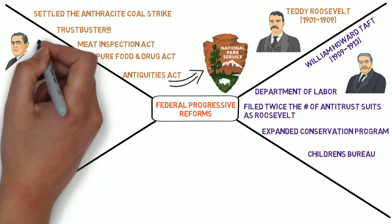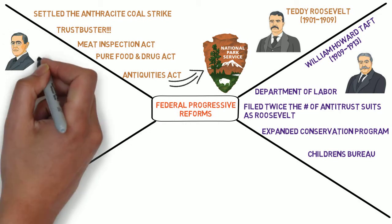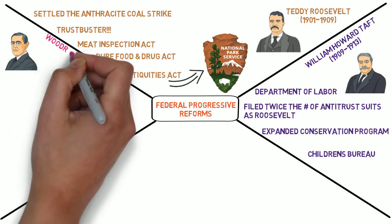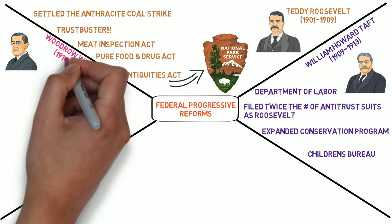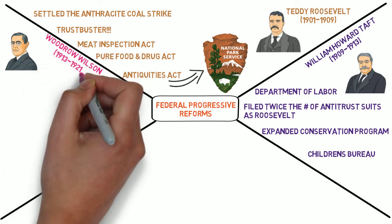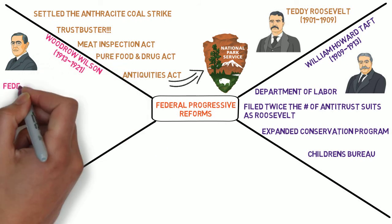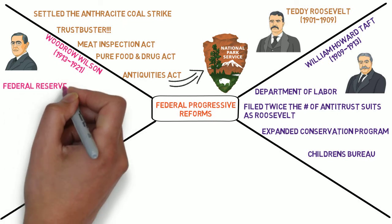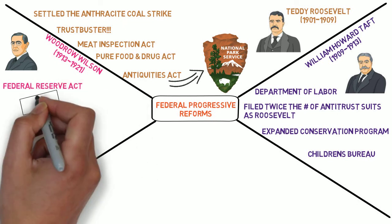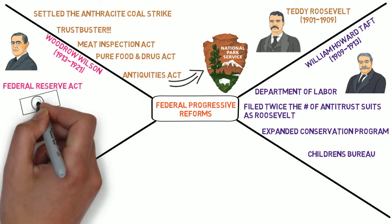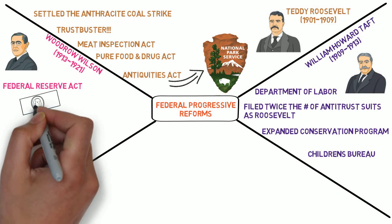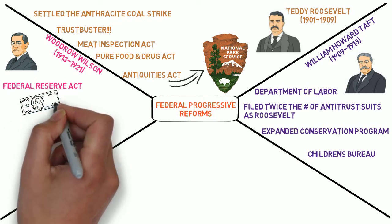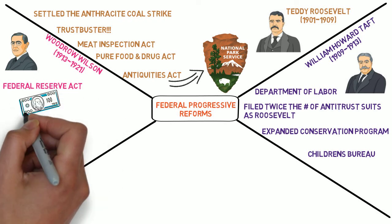Woodrow Wilson became president in 1913 and implemented even more progressive reforms. One of his biggest was the creation of the Federal Reserve System in 1913. The Federal Reserve was created to oversee the nation's banking and financial industry as well as stabilize the nation's system of currency.